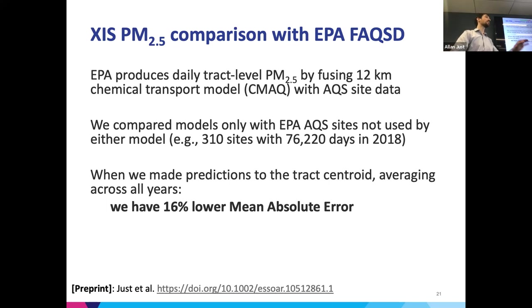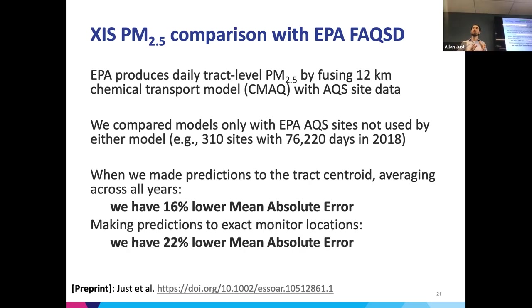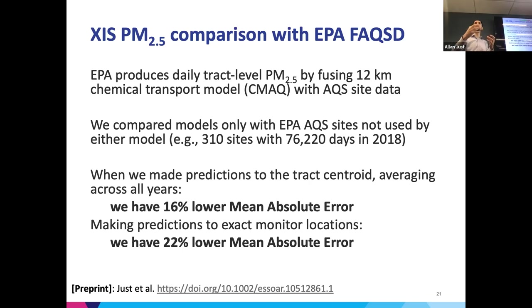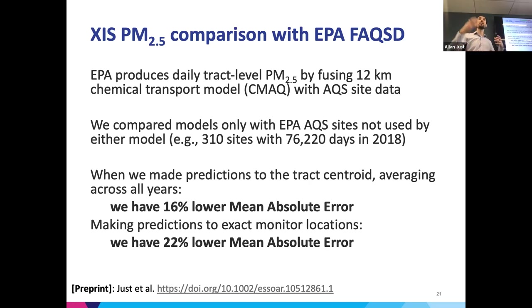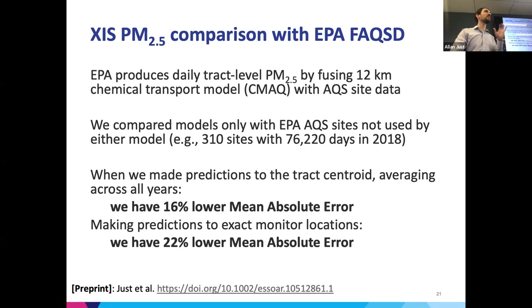We also made predictions to the exact locations of those air quality monitors we were testing on, and we're able to get even lower mean absolute error — even more improved versus the FAQSD. This is a decomposition of how much better we do when we try to play their game, and then what's the improvement of having that local information — being able to drill down within a tract, not just assuming everyone is breathing the air at the centroid. Some people live on the edges. We also like the weighted population center that the decennial census produces. This is a cool decomposition of the added benefit of having something at the sub-tract level.